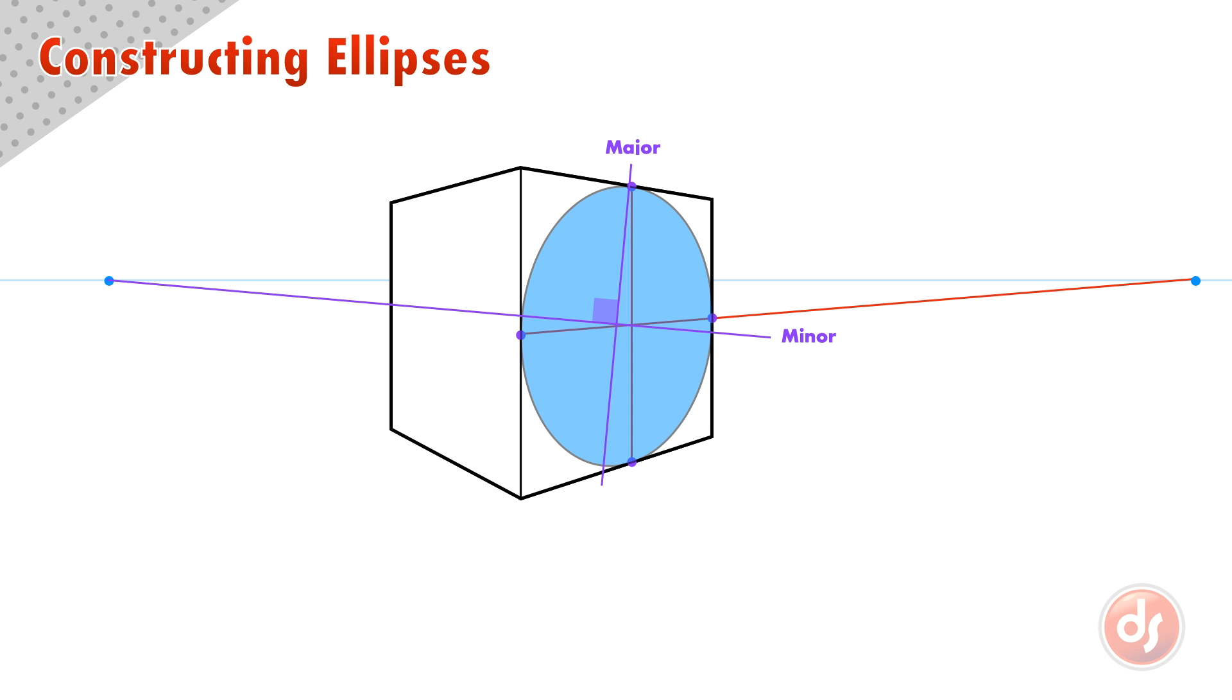This construction method will give us an ellipse correctly oriented to the perspective we have chosen. We can also see that the minor axis goes through the widest points of the ellipse, the center of the ellipse in perspective, and aims at the opposite vanishing point, which confirms our ellipse is correct in perspective.